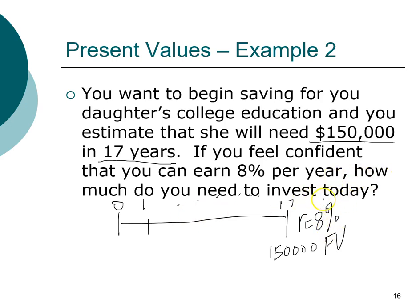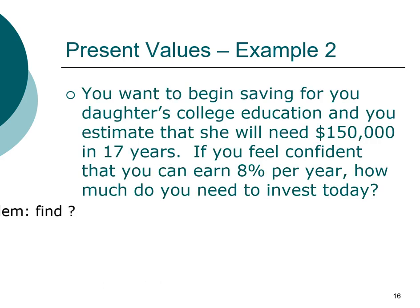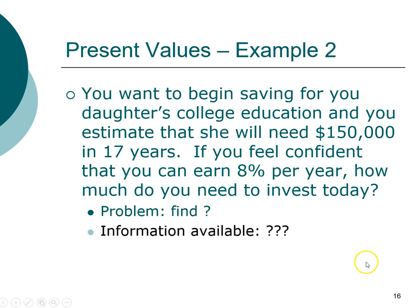We believe that you can earn 8%, so let's put that down as well. The question is: how much do you need to invest today? On the timeline, today — year zero — represents present value, the beginning of the investment horizon. We know our problem: we need to find the present value. We have all the information — the investment horizon, the future value, and the interest rate. Pause the video, give yourself a few minutes, and work out how you would solve it.